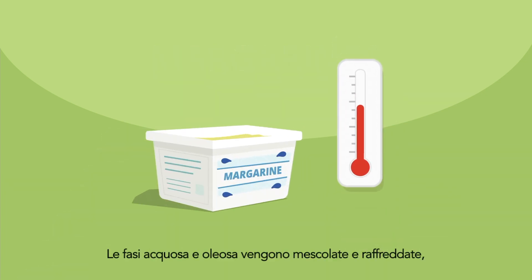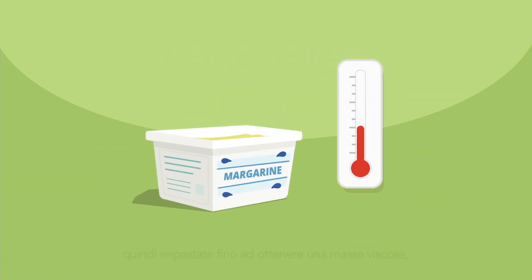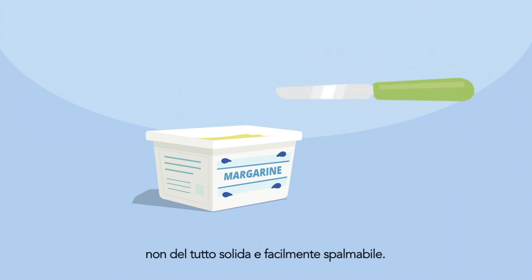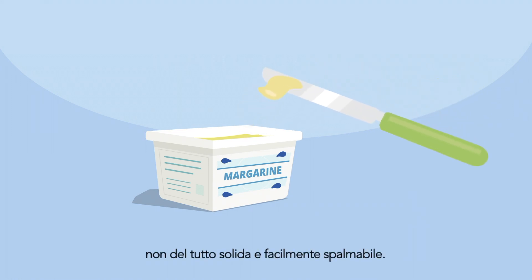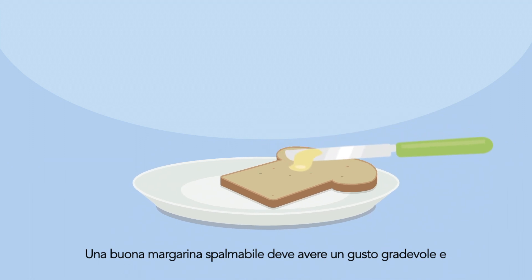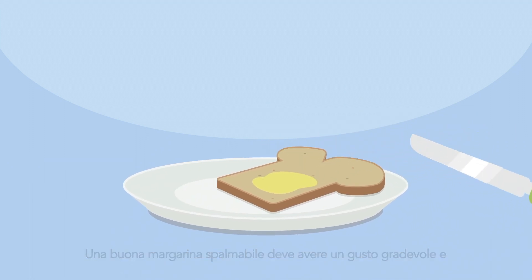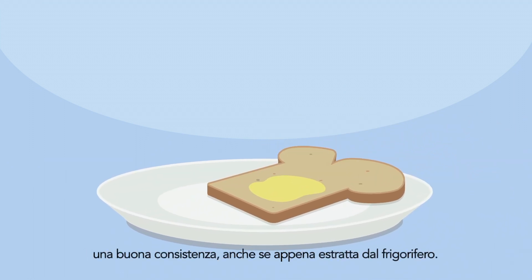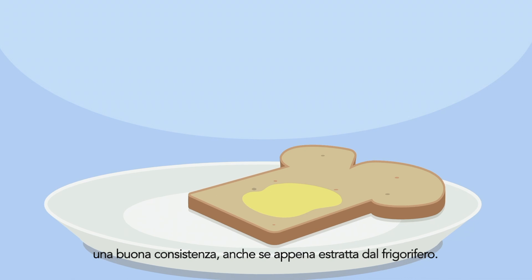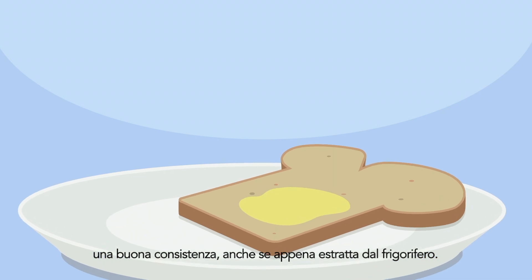The water and oil phase are mixed and cooled down, then kneaded into a viscous mass which is not completely solid and easily spreadable. A good spreading margarine has good taste and a nice texture, also when taken directly from the fridge.